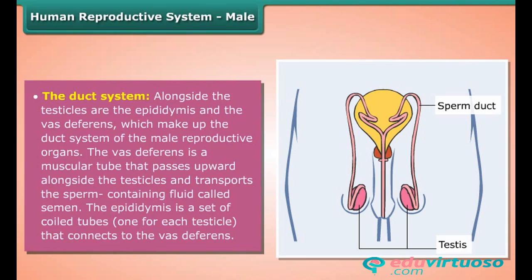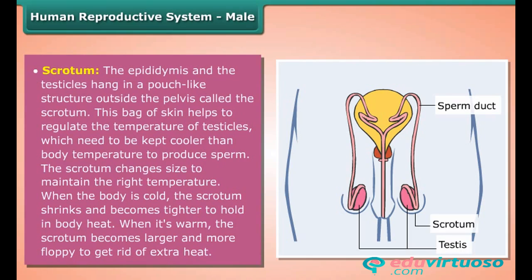The epididymis is a set of coiled tubes, one for each testicle, that connects to the vas deferens. The scrotum: the epididymis and the testicles hang in a pouch-like structure outside the pelvis called the scrotum. This bag of skin helps to regulate the temperature of the testicles, which need to be kept cooler than the body temperature to produce sperm. When the body is cold, the scrotum shrinks and becomes tighter to hold in body heat.